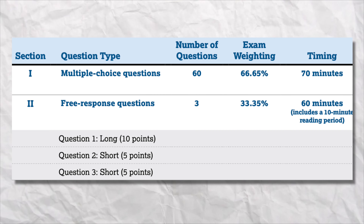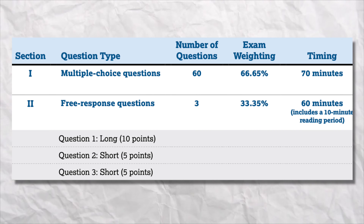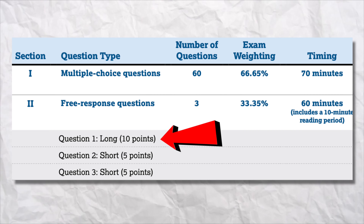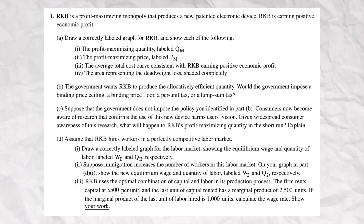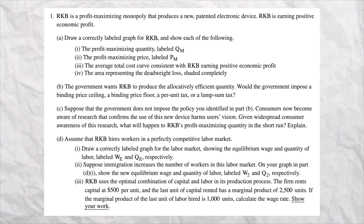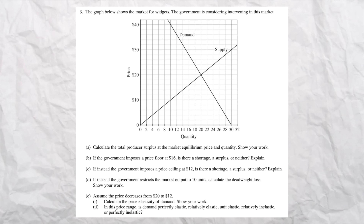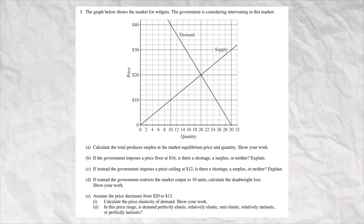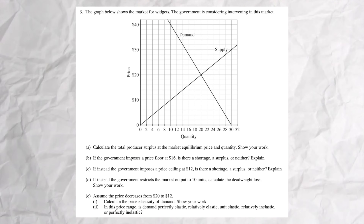As you know, there are three free responses on the AP microeconomics exam. The first one is longer and worth more points, and usually includes questions from multiple units. The second and third free responses are shorter and usually pull content from only one unit.